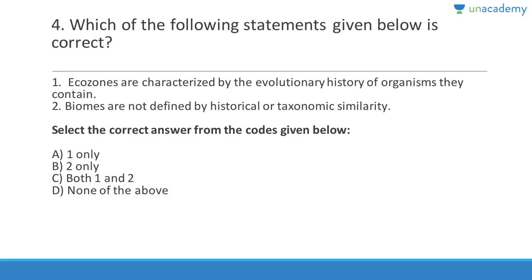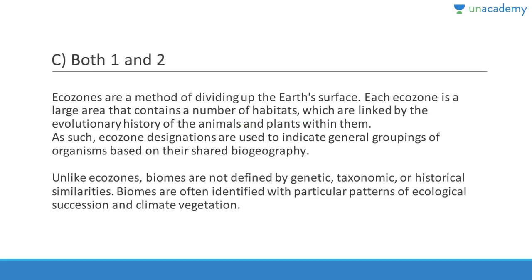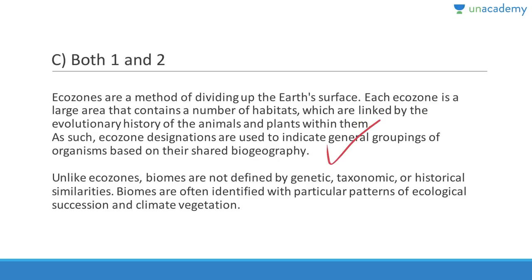The answer is C, both one and two. Ecozones are a method of dividing up the Earth's surface; each ecozone is a large area containing a number of habitats linked by the evolutionary history of the animals. Ecozone designations indicate general groupings of organisms based on their shared biogeography. Unlike ecozones, biomes are not defined by genetic, taxonomic, or historical similarities — biomes are often identified with particular patterns of ecological succession, climate, and vegetation.